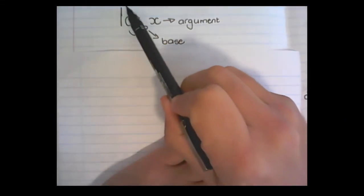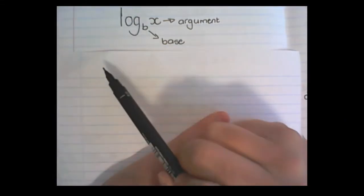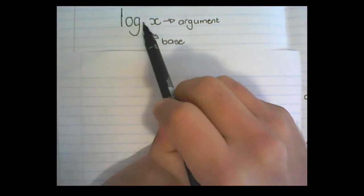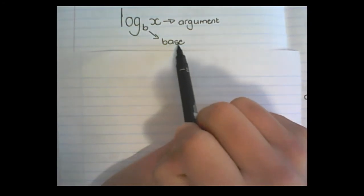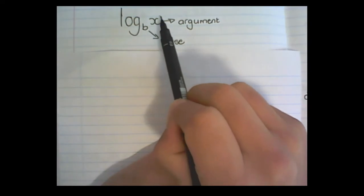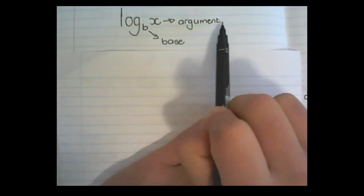What you understand about log is that it is the inverse function of an exponential graph. Then this part here is called the base of the log, and that part there in the place of x, whatever you write down there is called the argument.